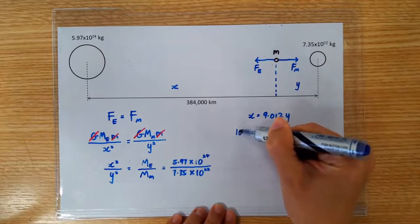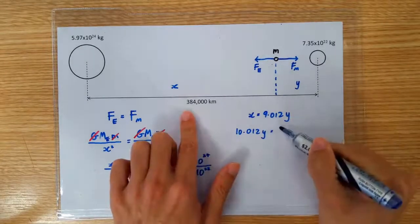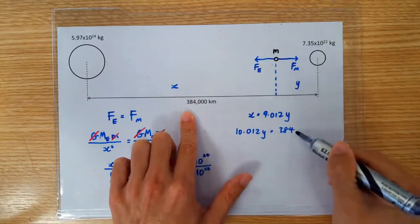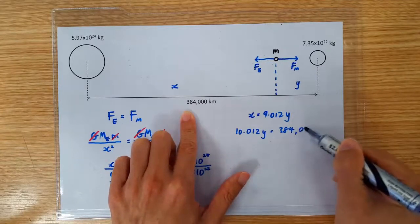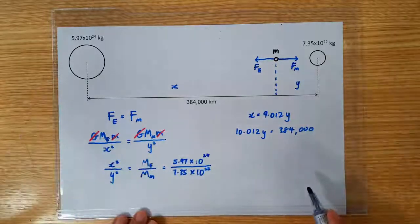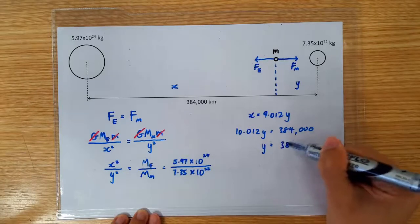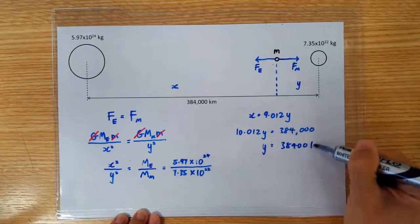So, we can write 10.012y to be equal to 384,000 km. Because that's the distance between the Earth and the Moon, which allows us to solve y to be 38,400 km.